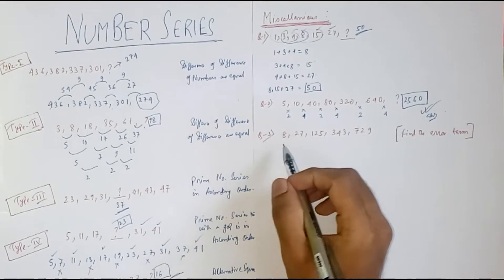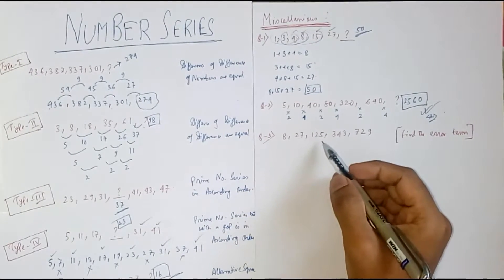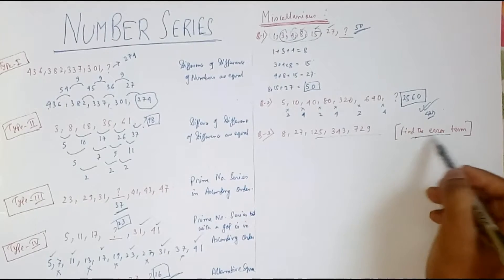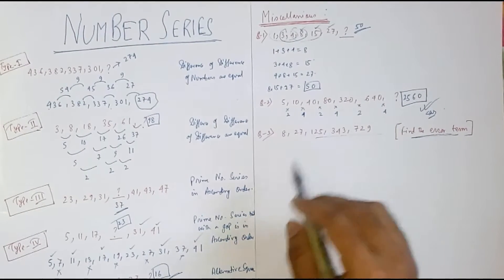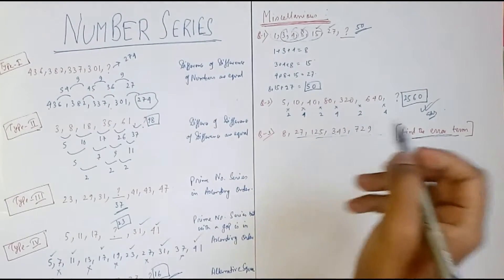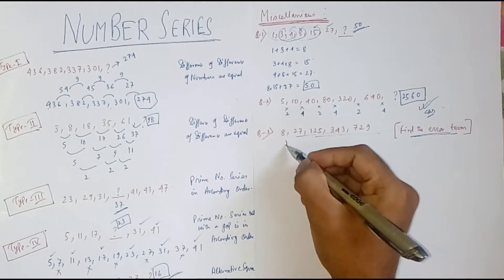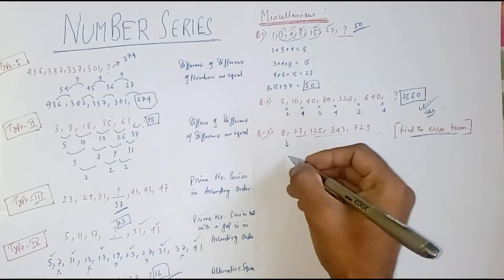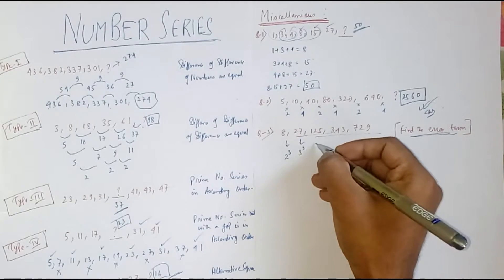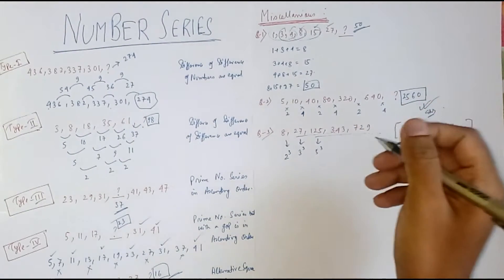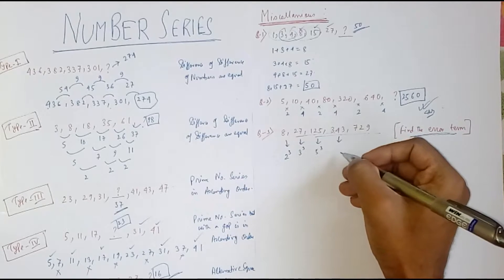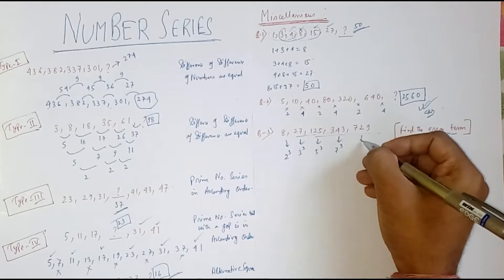Next example: 8, 27, 125, 343, 729 — we have to find the error term. By looking at this series we can say it follows a cube pattern. This is 2 cubed, then 3 cubed, this is 5 cubed. Always memorize the cube series — it will be very helpful for your exam and save time. Then this is 7 cubed and this is 9 cubed.